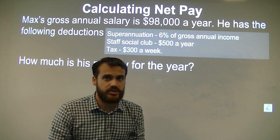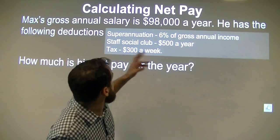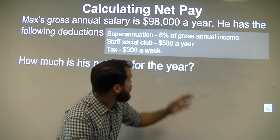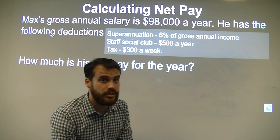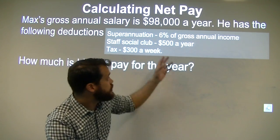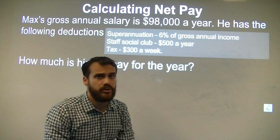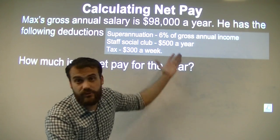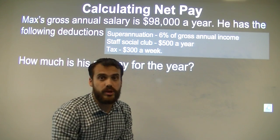Max's gross annual salary is $98,000 a year. He has the following deductions — three different deductions from his pay. He's going to have superannuation, which is 6% of his gross annual income. He's going to have the staff social club, which is $500 a year. He also needs to pay tax of $300 a week.